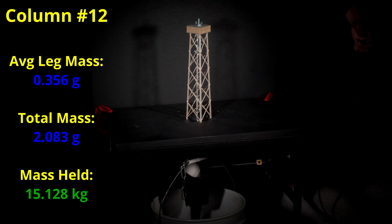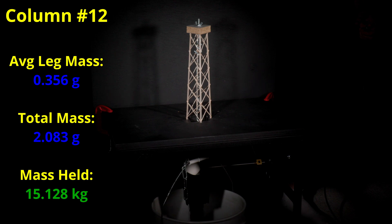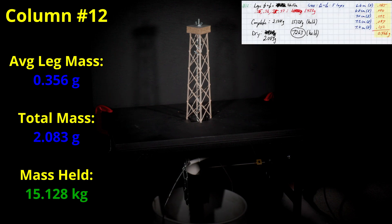It turns out the 12th time is a charm. Here is the live video of the test. I really wanted to get a column that I could use for the benchmark build, so I decided to use legs that had an average mass of 0.356 grams, which is slightly more than the column number 6 that held over 25 kilograms. I coupled those strong legs with fairly light cross bracing that only weighed 0.466 grams, so the finished column weighed 2.083 grams.